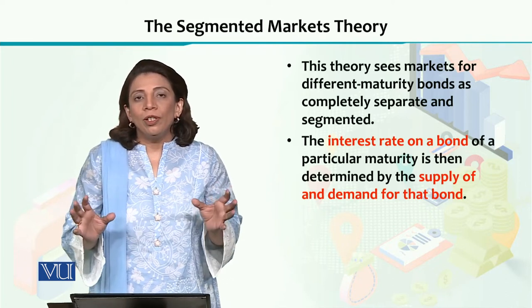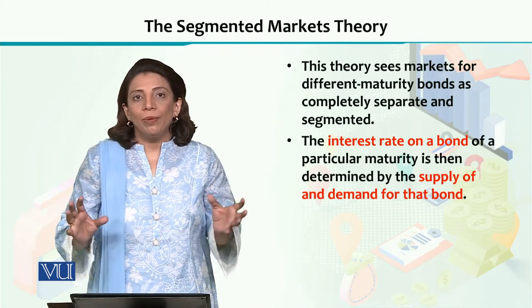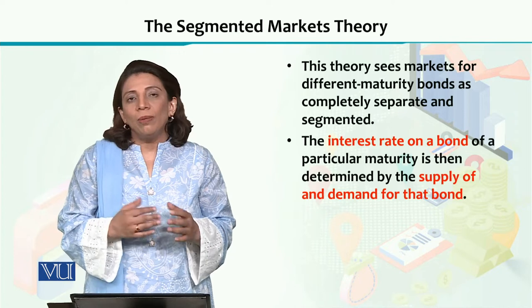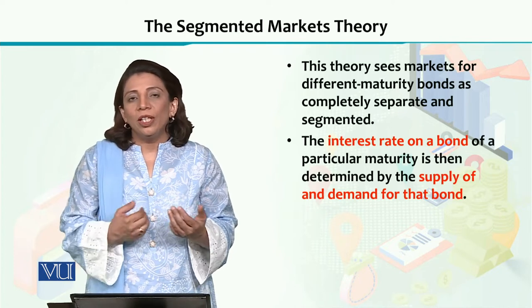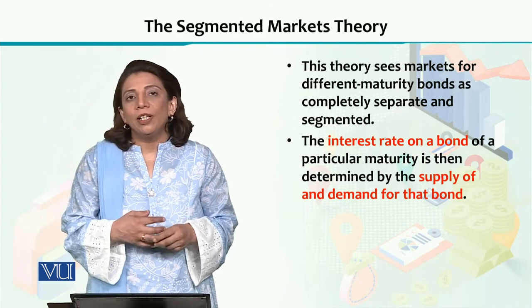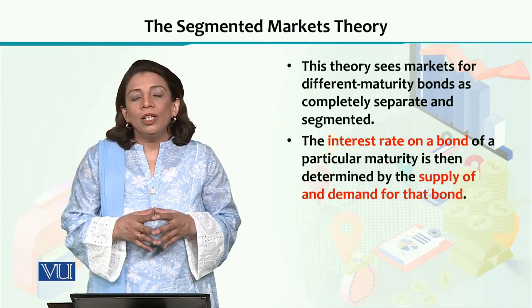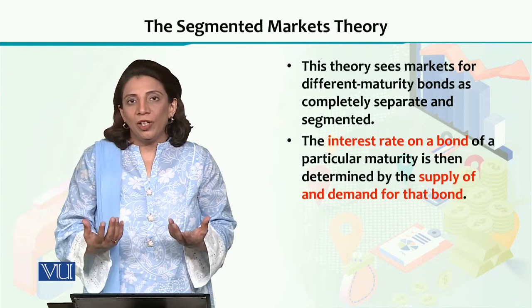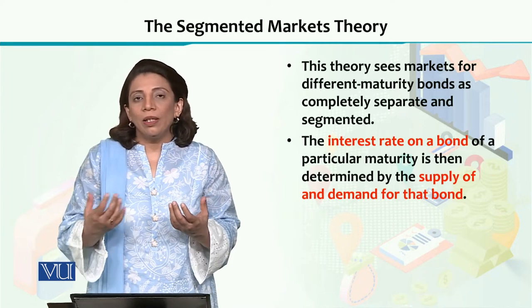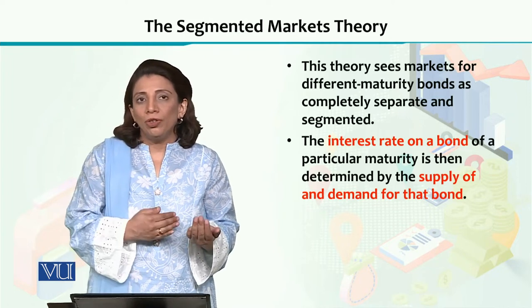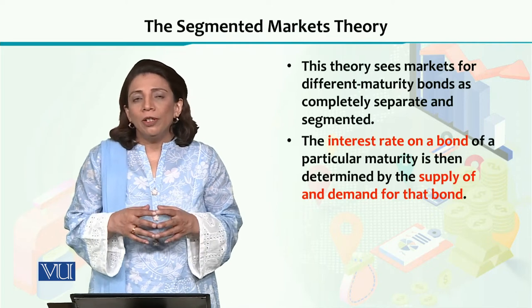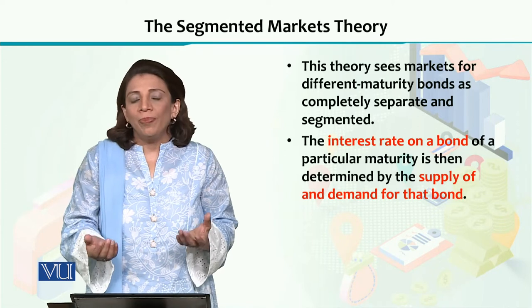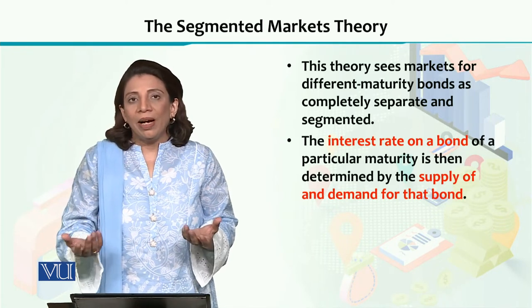They belong to different segments of the market. Previously we were saying that short-term, long-term, and different maturity time periods are the same market and they are perfectly substituted for one another. So if the expected yield is the same for short-term and long-term, investors become indifferent — they can take anything from both of them. They are equally demanding.